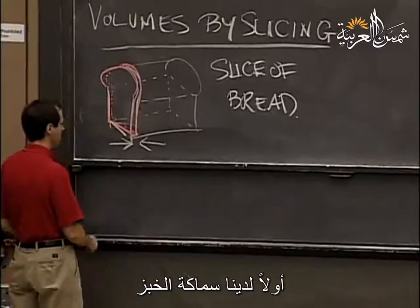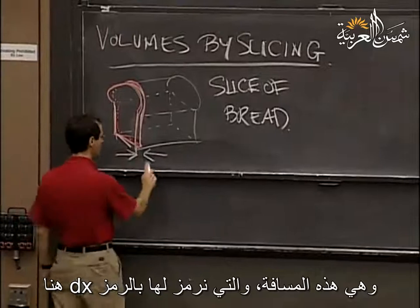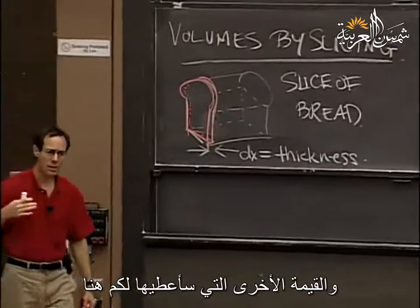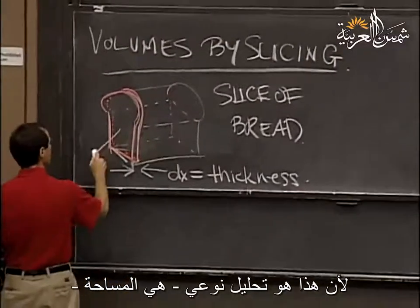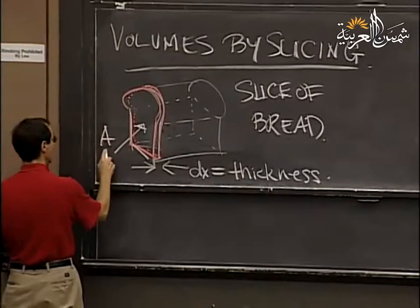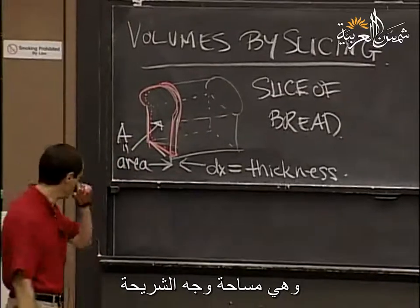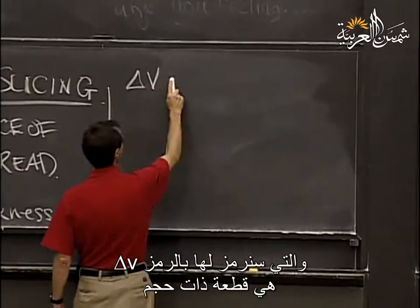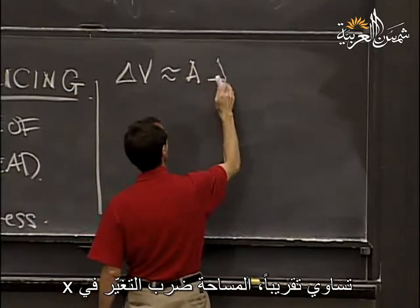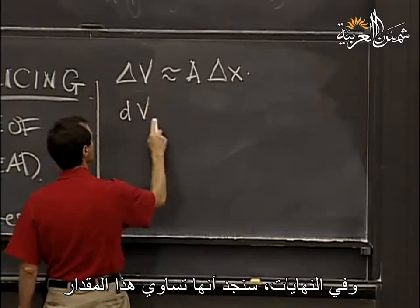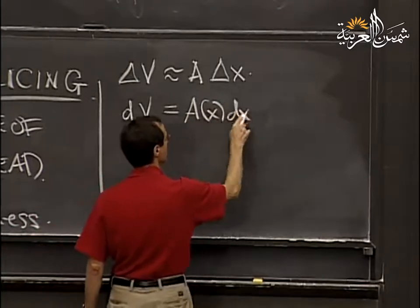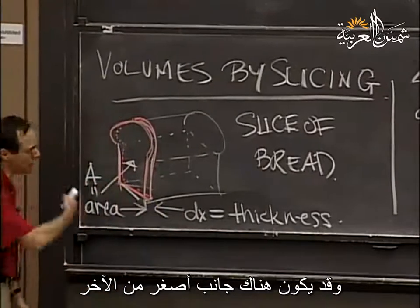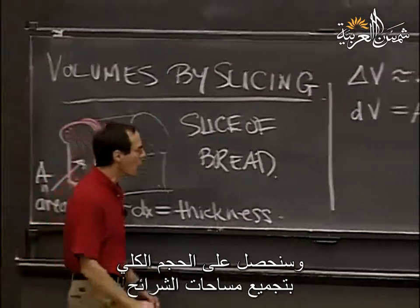What I'd like to figure out is the volume of this slice. First, there's the thickness of the bread, which is this dimension dx here. The only other dimension I'm going to give — because this is a very qualitative analysis for now — is what I'll call the area. That's the area of the face of the slice. So the area of one slice, which I'll denote by delta v, is approximately the area times the change in x. And maybe the areas of the slices vary — there might be a little hole in the middle, or it gets smaller on one side. So it might change as x changes, and the whole volume you get by adding up.